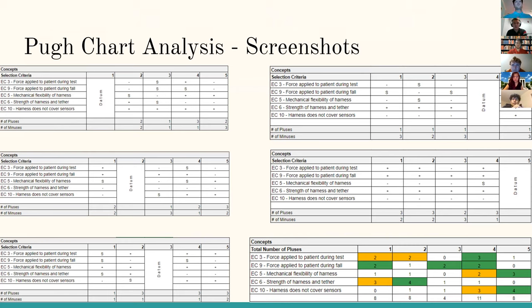So here's the screenshots for the Pugh chart analysis. As you can see from the top left image, we have concept one as the datum, and you can see that with concept one matched up with concept two, you have two minuses, meaning it was worse, an S, meaning it was the same.